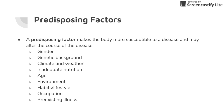Some predisposing factors are things you can't change, like your genetic background. Others, like climate and weather, you could address by moving somewhere else if that's causing the disease, or inadequate nutrition — things of that nature. All of these could be predisposing factors that either contribute to or help you avoid getting a disease.